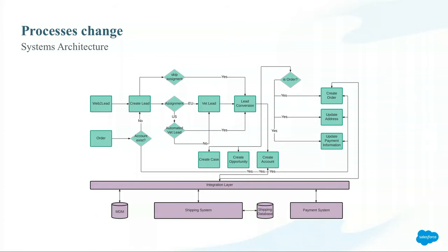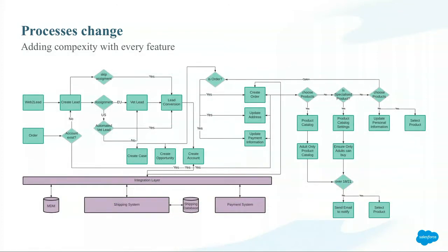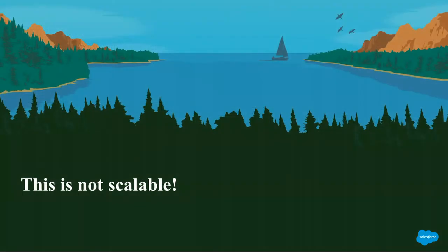More and more features were added onto our platform and into our system architecture. With every feature, our system architecture grew and grew. To be honest, I assumed this wouldn't be readable anymore — otherwise I would have added more — but the screen is pretty big. That approach is just not scalable. We're adding more and more features and our architecture blows up, and now nobody understands everything anymore.